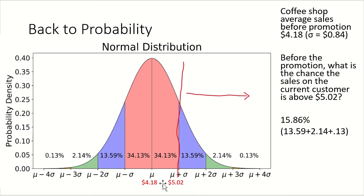Let me give you a couple of numbers so that you can see it for sure. If I am looking at, on any given day, based on my average being $4.18 and my standard deviation of 84, what is the chance that the sale that comes in is above $5.02? What is the chance, so this tail here, that the next sale that comes in is above $5.02?